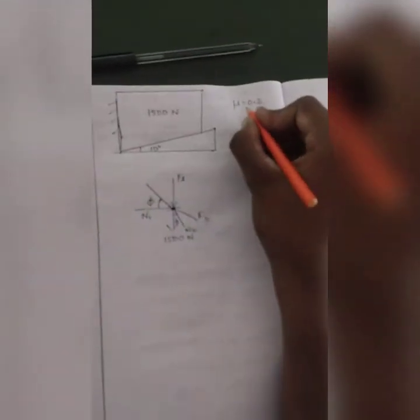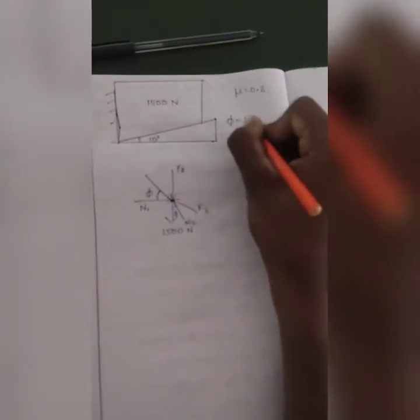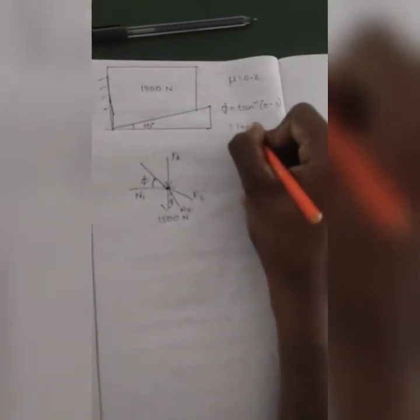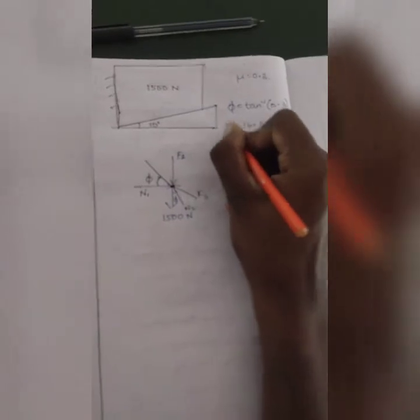Now, if we know mu, φ is tan inverse of 0.3. That is 16.69 degrees.